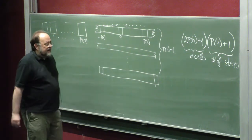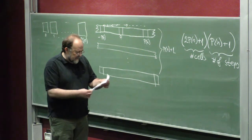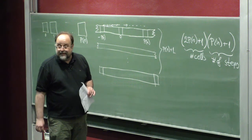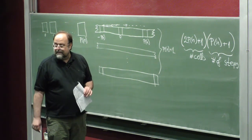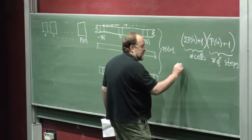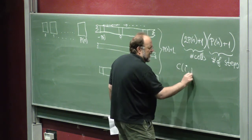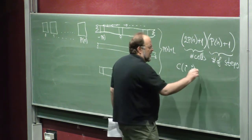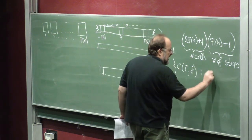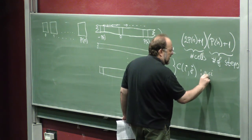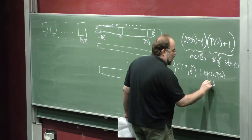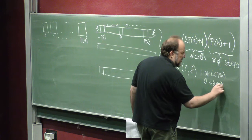So let's call the cell variables: cell i at instance of computation j. This will be variables C(i,j) — or more precisely C(i,j,k) — where i goes between minus p(n) and p(n), and j goes between zero and p(n). The intended meaning is that the variable will be true if cell i at step j has symbol k, where k ranges between 1 and the number of symbols.